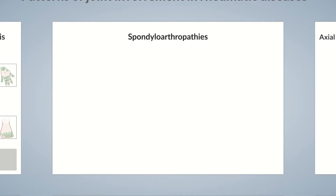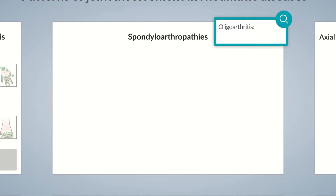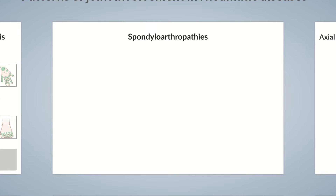Now let's take a look at a few examples of oligoarthritis. Oligoarthritis is defined as the involvement of two to four joints. This especially applies to a group of arthritic disorders termed spondyloarthropathies. The name spondyloarthropathies implies that these conditions can lead to spinal inflammation — the prefix spondyl means spine.